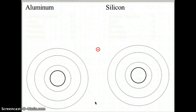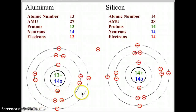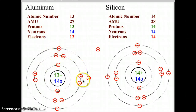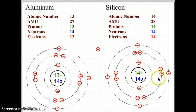Go ahead and try aluminum and silicon. Pause the video as you complete both Bohr models, then turn the video back on and check your work. For aluminum: 13 protons and 14 neutrons, with electrons arranged two in the first shell, eight in the second shell, and three in the third shell for a total of 13. For silicon: 14 protons and 14 neutrons, with two in the first, eight in the second, and four in the third, for a grand total of 14 electrons.